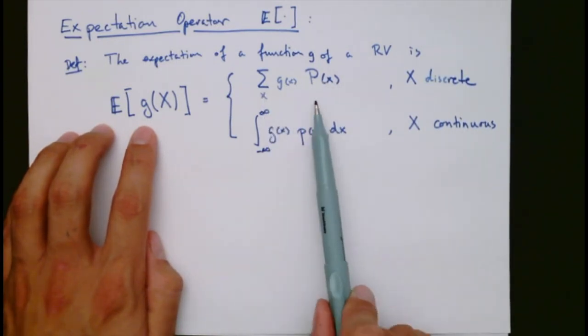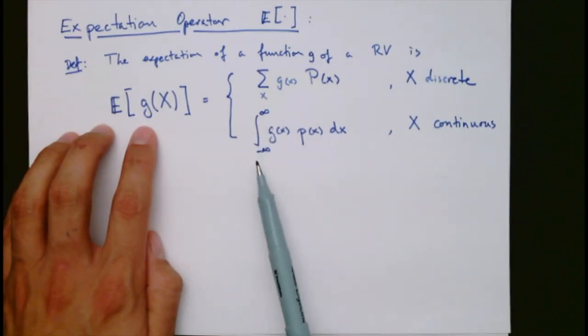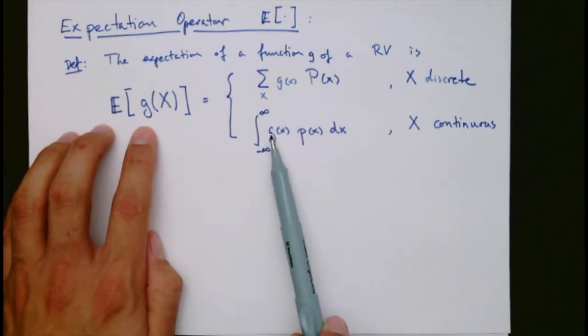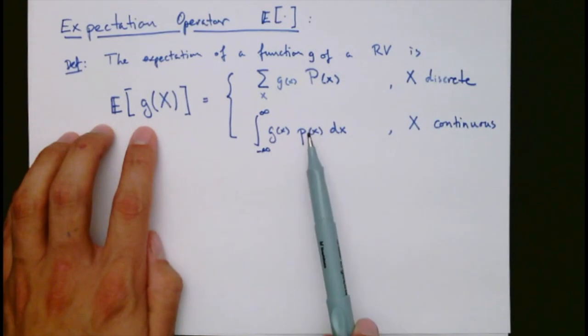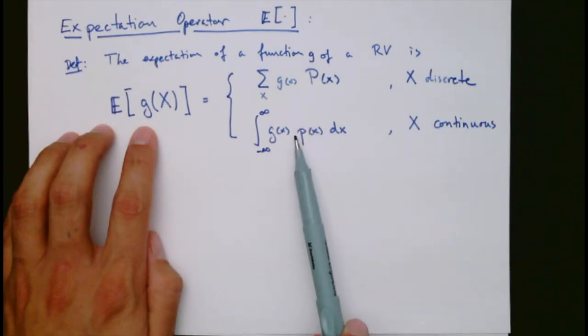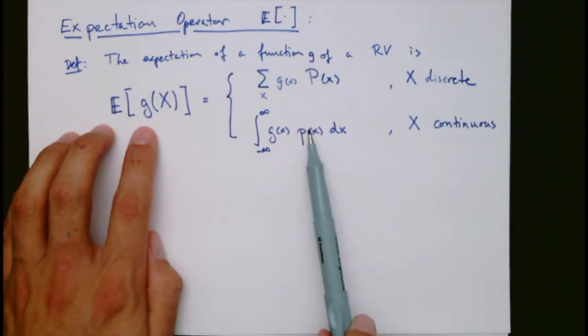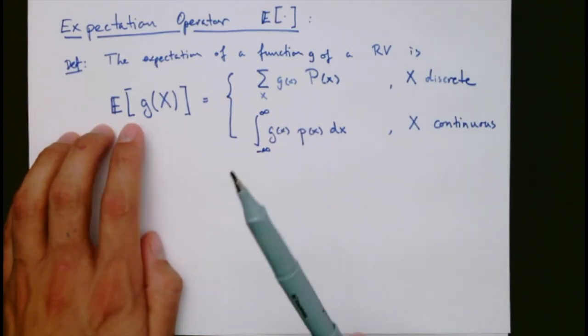Similarly, in the continuous case, we evaluate g on every value x can take and weight it by the probability density function.